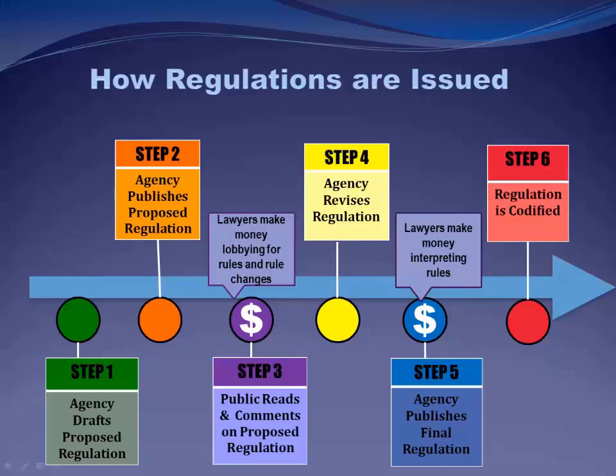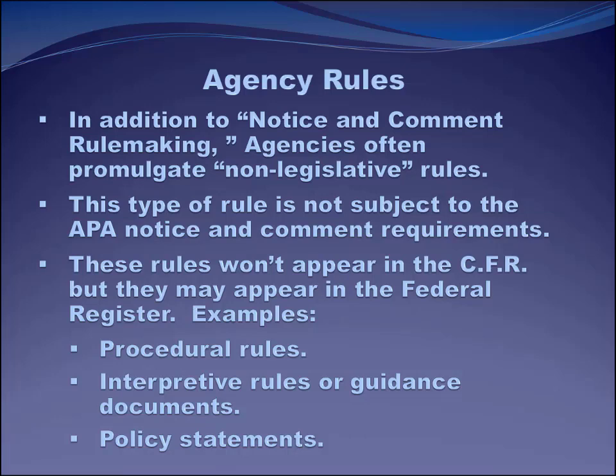In addition to notice-and-comment rulemaking, agencies often promulgate non-legislative rules, which are not subject to APA notice-and-comment requirements and won't appear in the Code of Federal Regulations, though they'll be in the Federal Register. Examples include procedural rules describing how hearings are run, interpretive rules or guidance documents providing more information about previously promulgated rules, and policy statements. The agency has no obligation to consider public comments on these non-legislative rules.